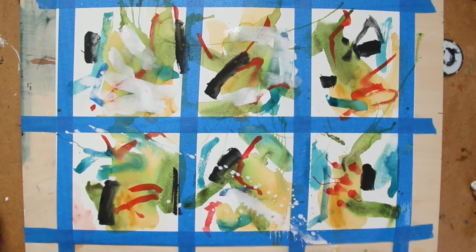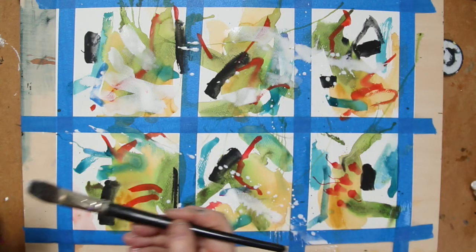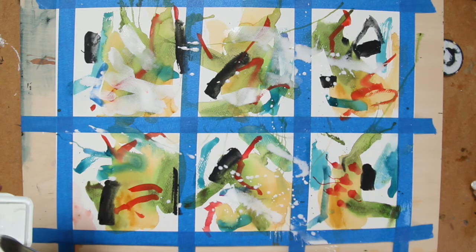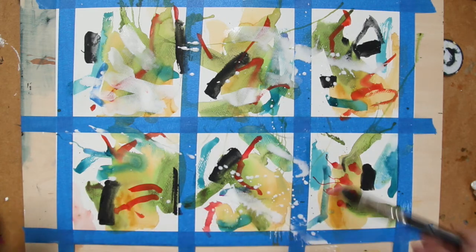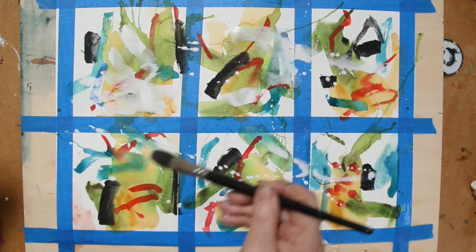Now I'm using the brush to start splattering this white paint all over the little six abstracts that I'm making here. This is what watercolor paint should do. You know, it needs you to be brave with it and to move it.